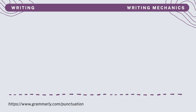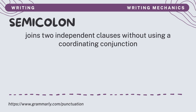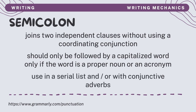The seventh punctuation is the semicolon. Semicolons are as basic as a period stacked on top of a comma. The most common use of the semicolon is to join two independent clauses without using a coordinating conjunction like 'and.' A semicolon should be followed by a capitalized word only if the word is a proper noun or an acronym. You can use semicolons to divide the items of a list if the items are long or contain internal punctuation. In this case, the semicolon helps readers keep track of the divisions between the items.